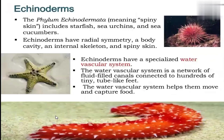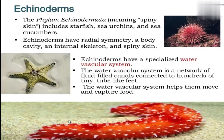Next, echinoderms. Phylum Echinodermata means spiny process. Examples: starfish, sea urchin, sea cucumber. Echinoderms have radial symmetry, a body cavity, internal skeleton, and spiny skin. They have a special water vascular system — a fluid-filled canal with hundreds of tiny tube feet connected to it — which helps in food capture and movement.